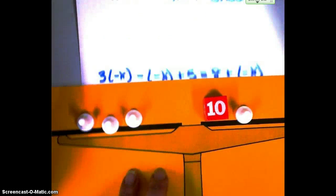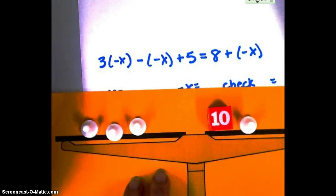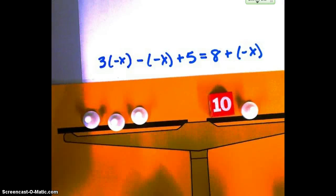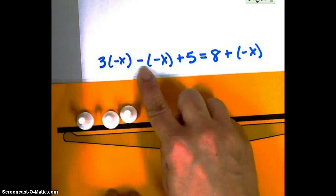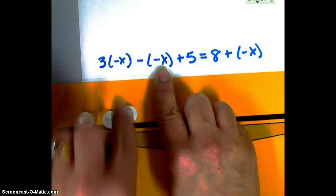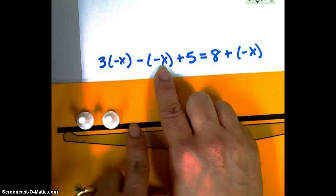One more to try. And then you get to try it on your own. Alright. So we've got the quantity 3 times the quantity negative x. And then I need to take one off. I'm going to subtract a negative x. And then I've got my 5.